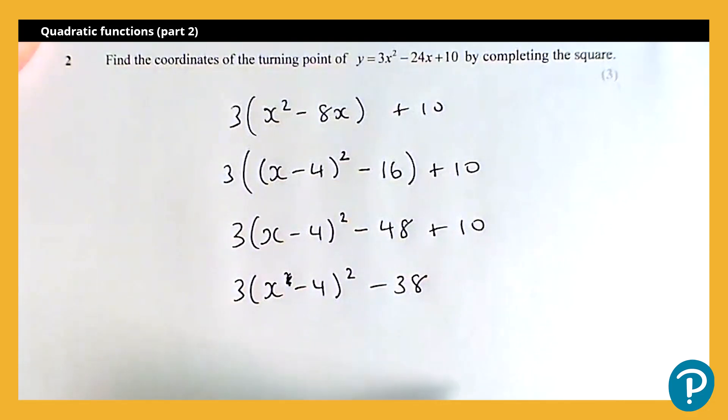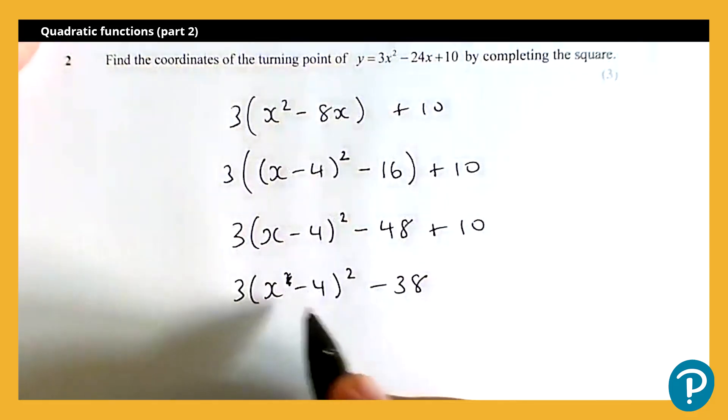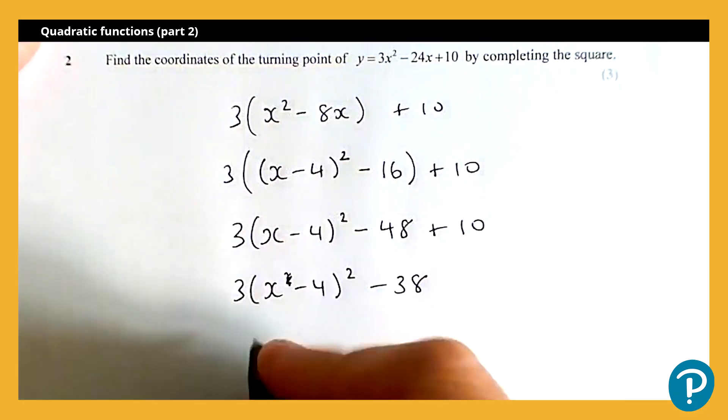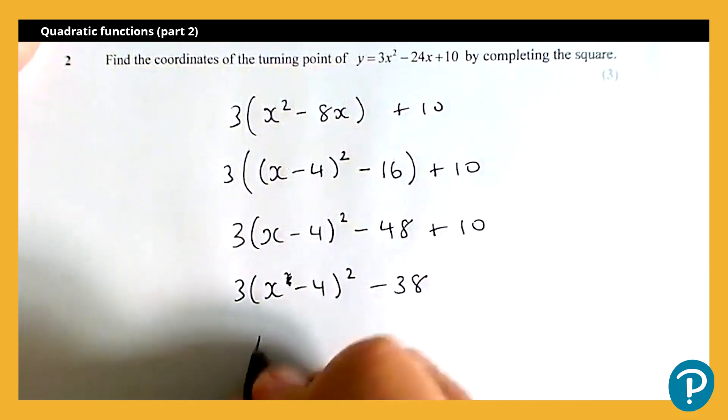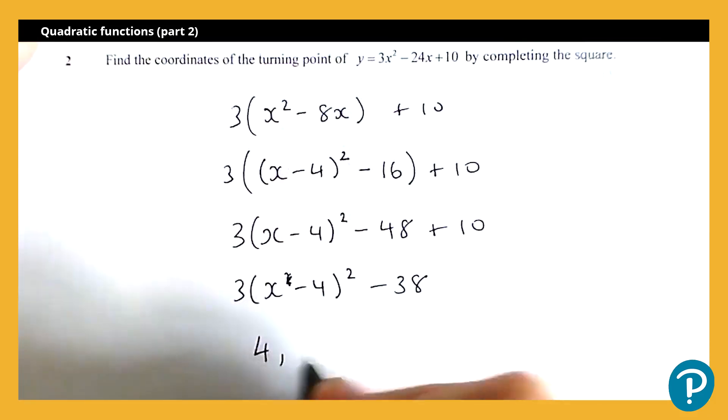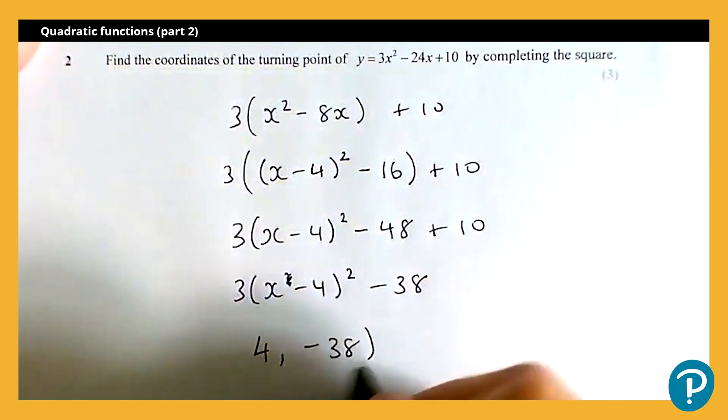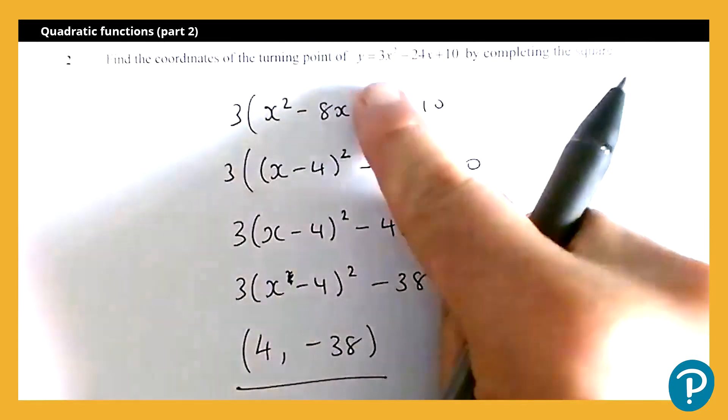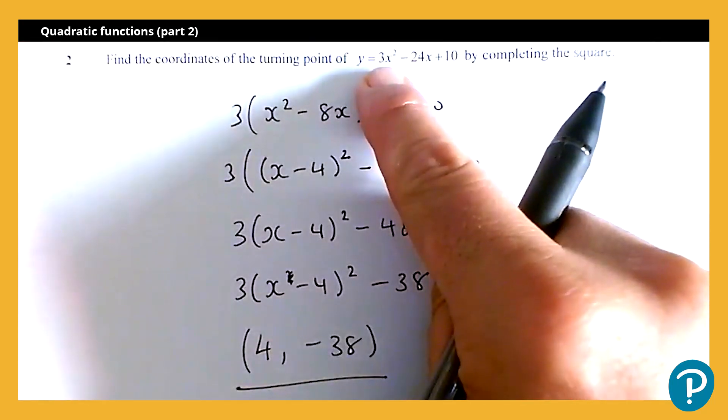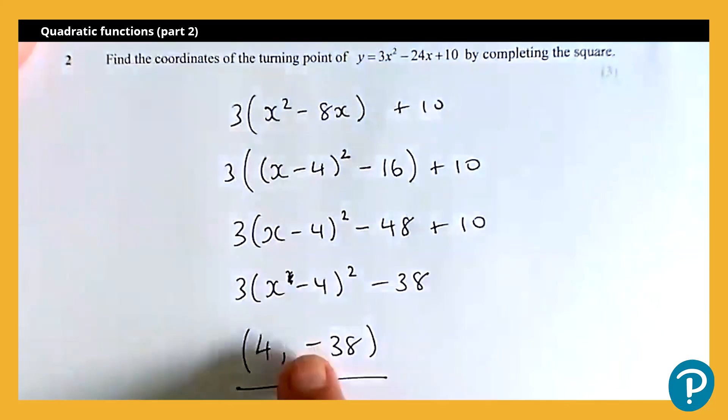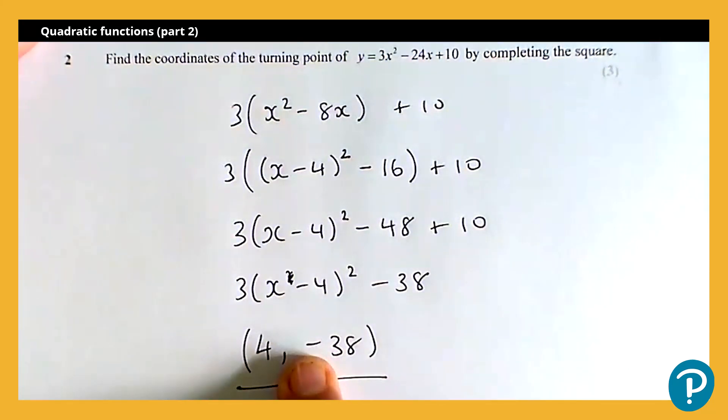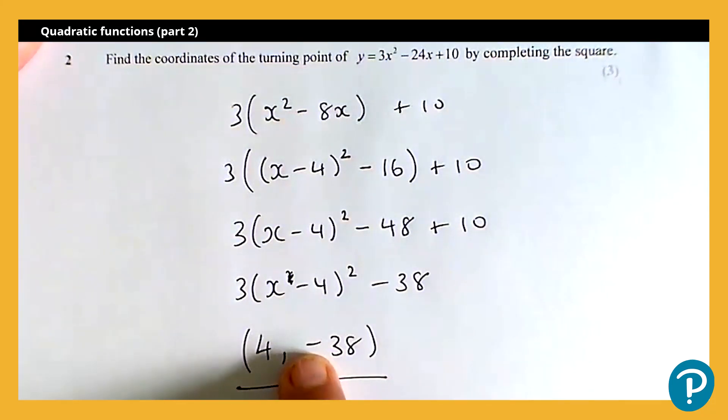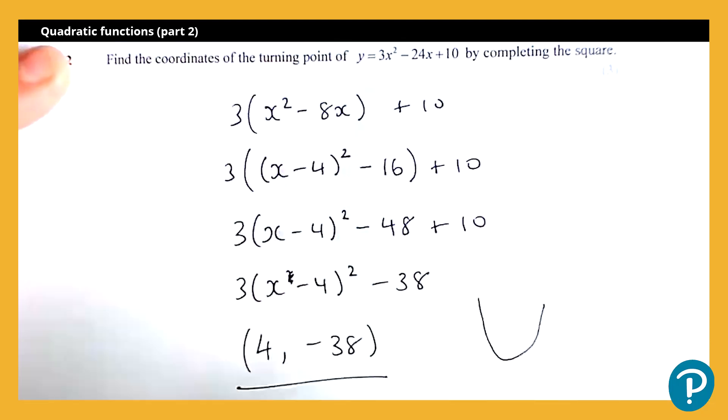So it's the negative of the value in the bracket, so negative of negative four is positive four, and then negative 38. And there's our answer. Other thing to possibly note that might come up, this is a positive quadratic, so it's a parabola shape that we're used to seeing. So that would make this point here a minimum value, not a maximum value, because our graph will be that shape.